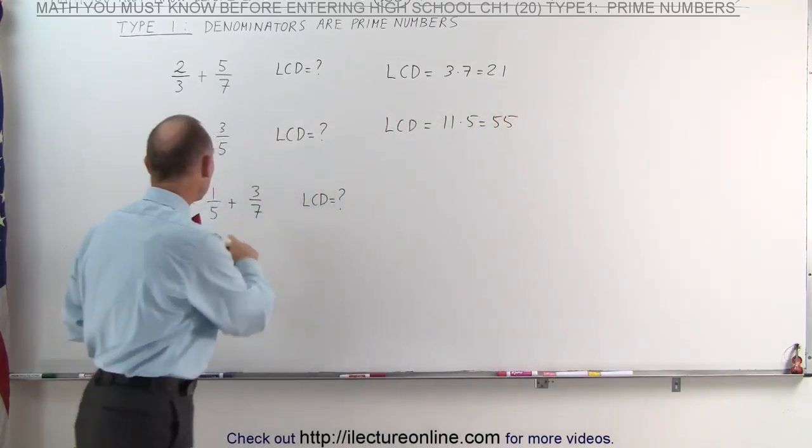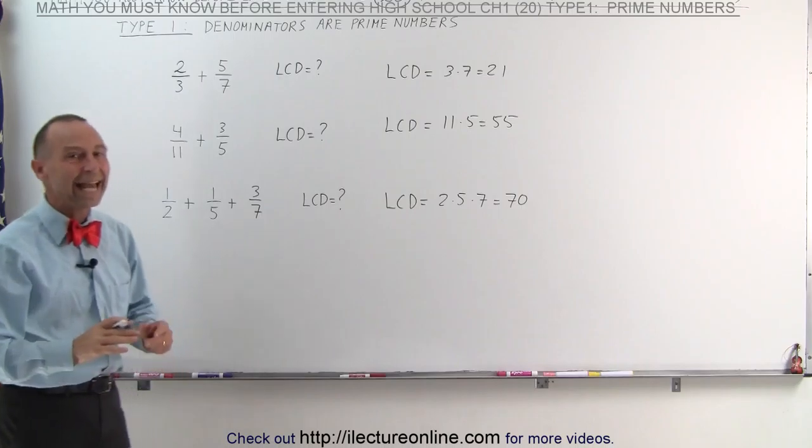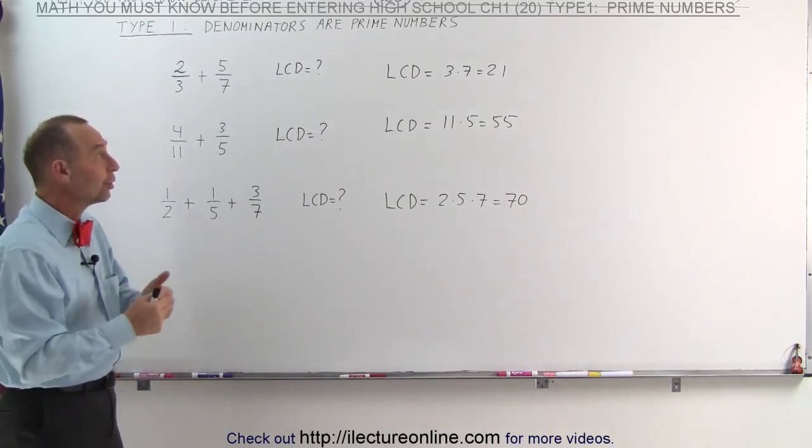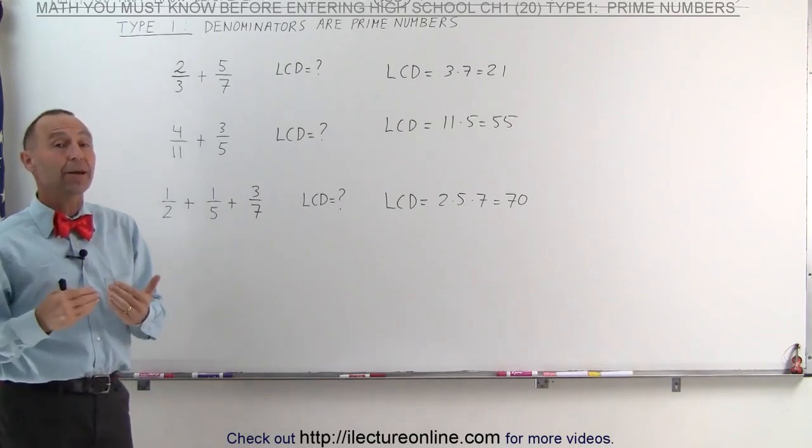And even when there's more than two fractions, the technique is still the same. We simply multiply the denominators together. And so this would be 2 times 5 times 7, which is 70.